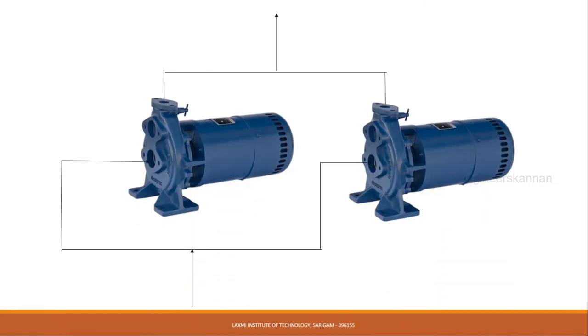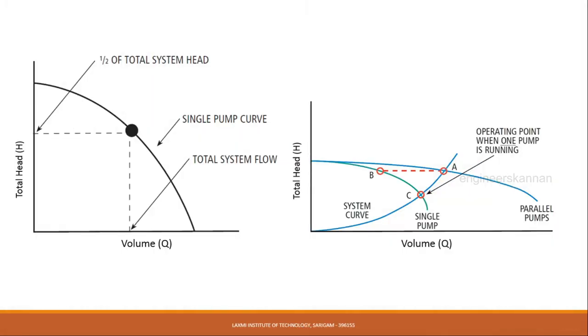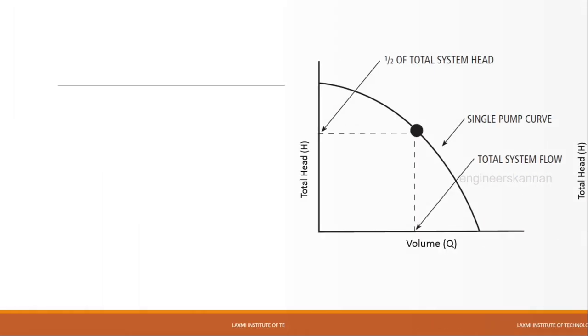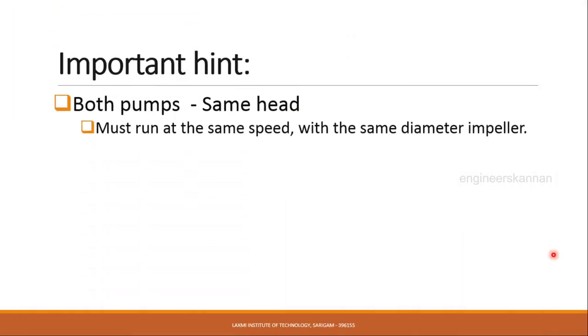Next we discuss parallel operating performance of pumps. The image represents two pumps connected in parallel. This configuration is used to increase the volume of water or fluid delivered by the pump. The performance curve indicates when a single pump is used versus when two pumps operate in parallel. The major thing is the total head is not changed, only the volume delivered is changed.